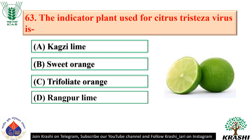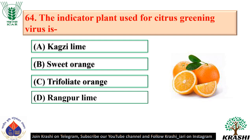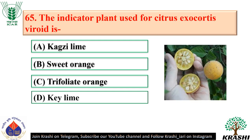Question number 62: Wheat streak mosaic virus is transmitted by mites — option C. Question number 63: The indicator plant used for citrus tristeza virus is Kagzi lime (Citrus aurantiifolia) — option A. Question number 64: The indicator plant used for citrus greening virus is sweet orange (Citrus sinensis) — option B. Question number 65: The indicator plant used for citrus exocortis viroid is trifoliate orange (Citrus trifoliata).